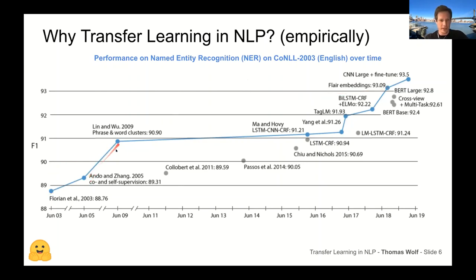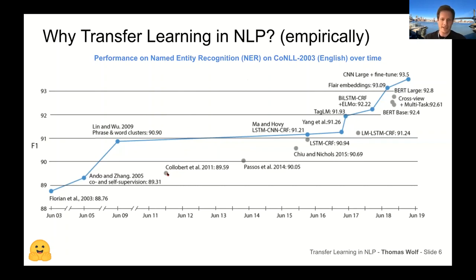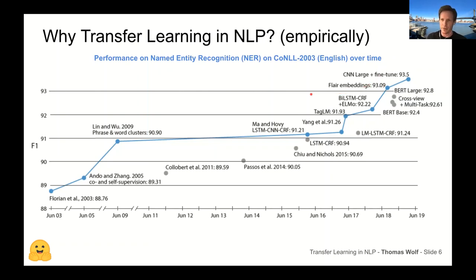The first jumps around 2009 were about using a variant of Brown clustering — an early way to use unlabeled data. Then you see the beginning of neural networks, with the Weston and Collobert paper, which received a test-of-time award. Then all these last jumps are combinations of transfer learning with neural networks — here you see TagLM, a predecessor of ELMo, and then all the jumps with BERT and its variants.